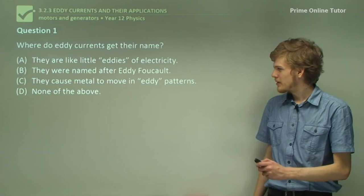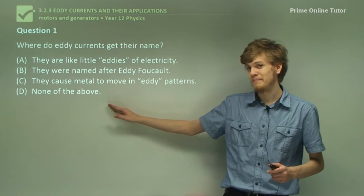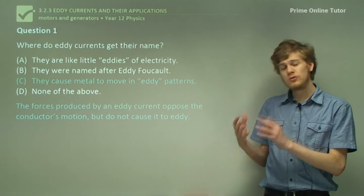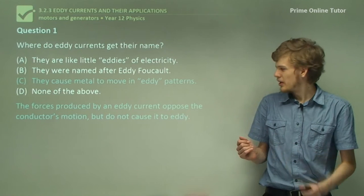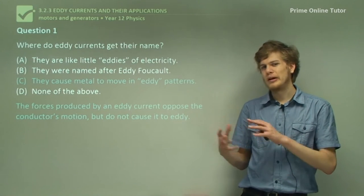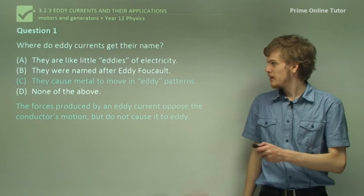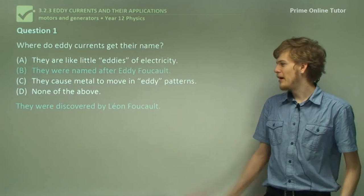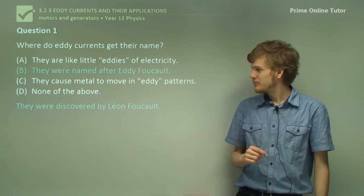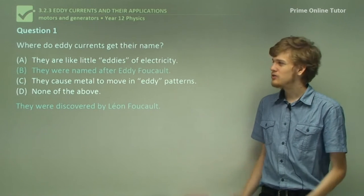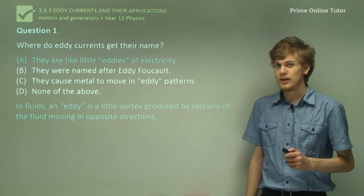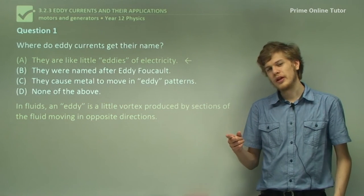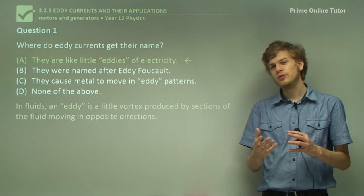Well, let's go through the options. It's not D, none of the above. The forces produced by an eddy current might oppose the conductor's motion, but they will not cause the conductor to move around in little spirals. Eddy currents were not named after Eddy Foucault, but they were discovered by Leon Foucault. So our final answer is A — they're like little eddies of electricity. Remember that an eddy is like a little whirlpool produced when two parts of a fluid meet each other.